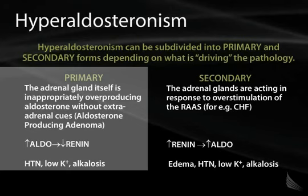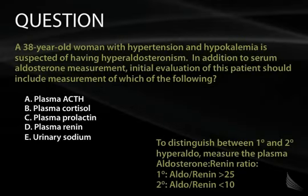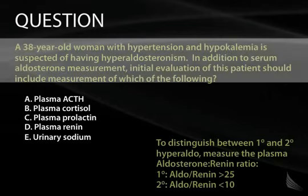In contrast, secondary hyperaldosteronism refers to a consequence of some other process driving the pathology — in this case the adrenal glands are responding to overstimulation of the RAA system. A classic example is CHF, where the primary driver is an increase in renin, which then increases aldosterone, leading to hypertension, hypokalemia, and alkalosis. In secondary hyperaldosteronism you will also have edema.